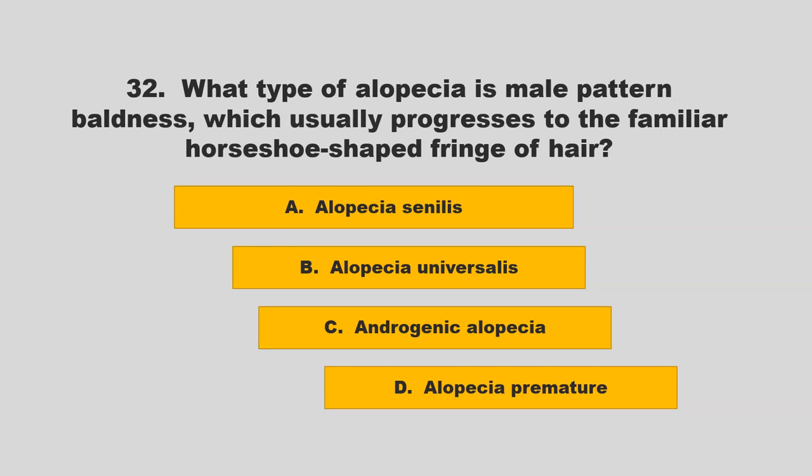What type of alopecia is male pattern baldness, which usually progresses to the familiar horseshoe-shaped fringe of hair? Is it alopecia senilis, alopecia universalis, androgenic alopecia, or alopecia prematura? If you chose C, androgenic alopecia, you are correct.